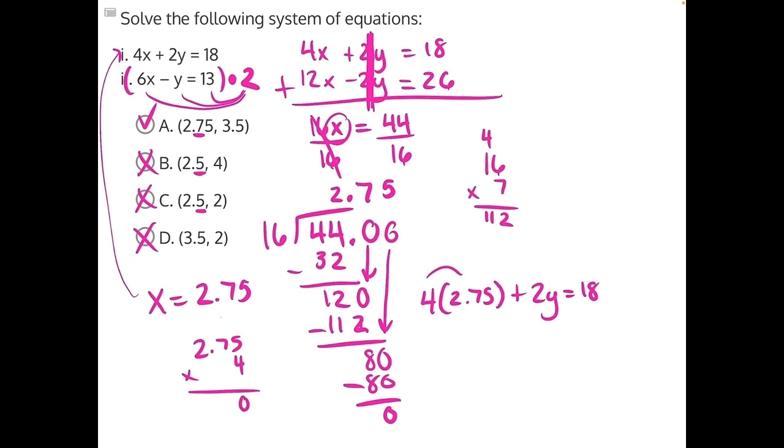4 times 5 is 20. 4 times 7 is 28 plus 2 is 30. And then 4 times 2 is 8 plus 3 is 11. Count 1, 2, 1, 2. So that is going to be 11 plus 2y is equal to 18.